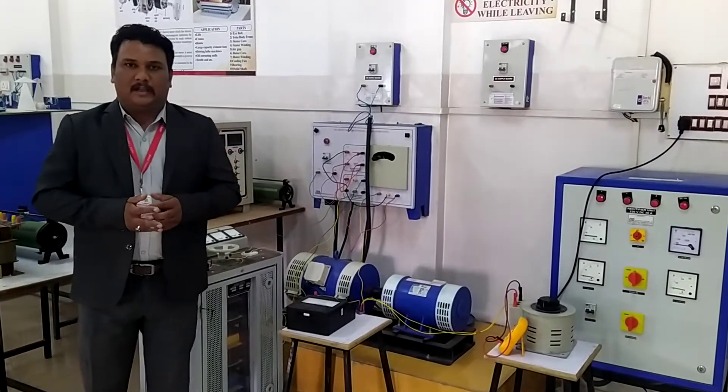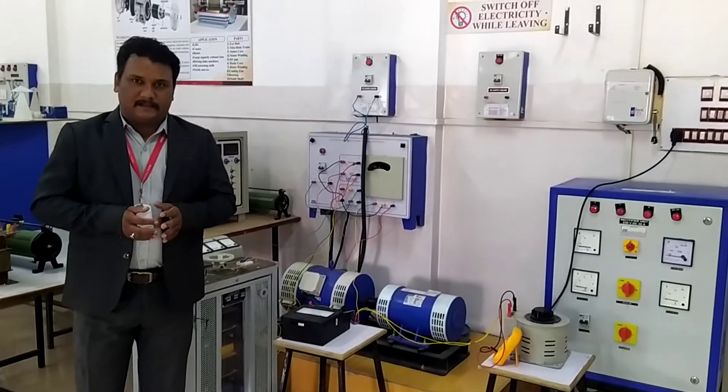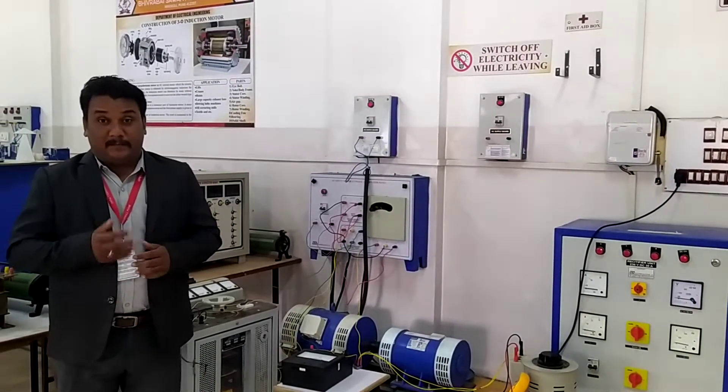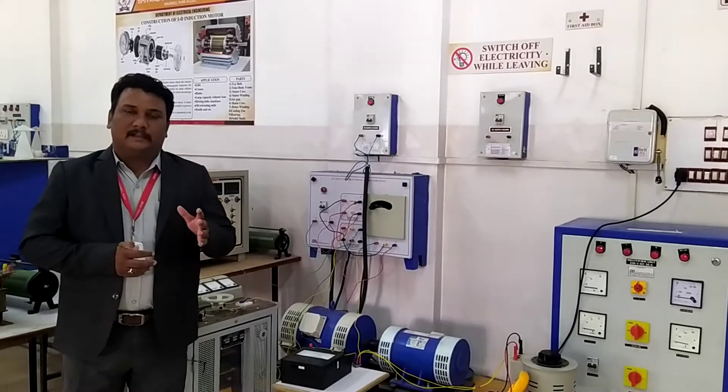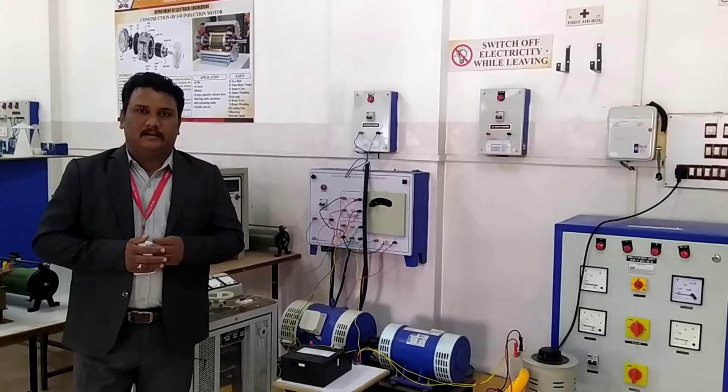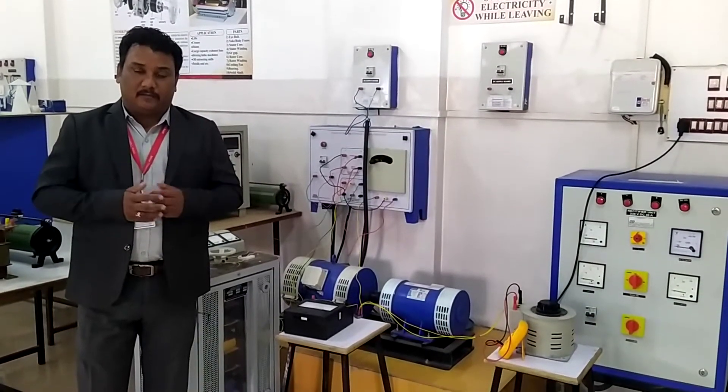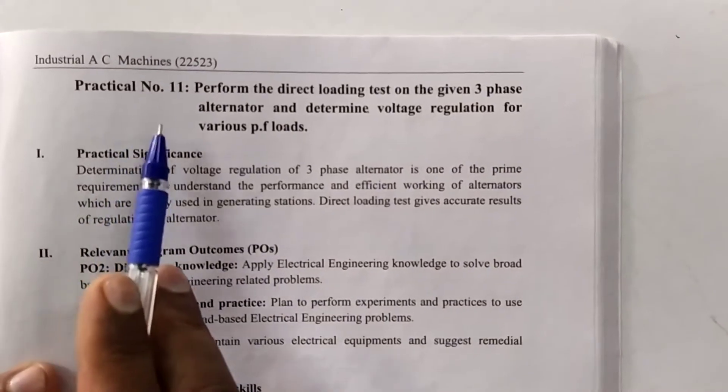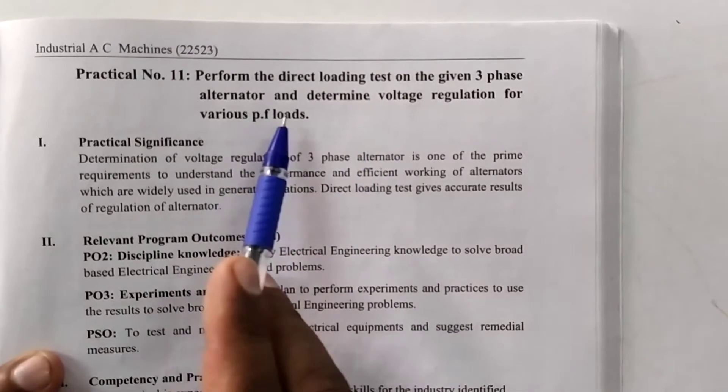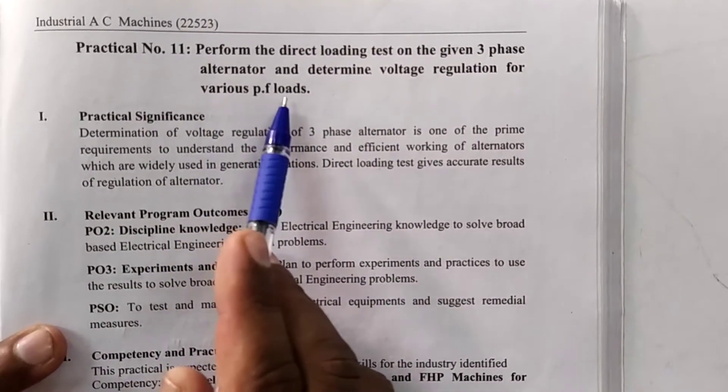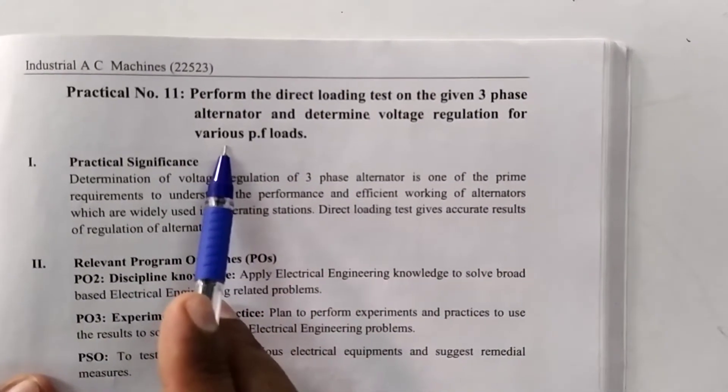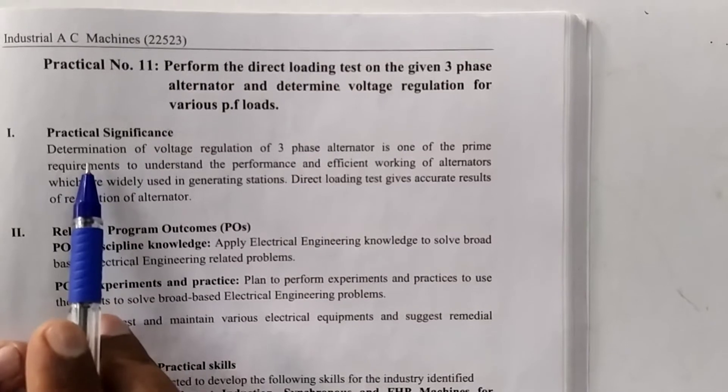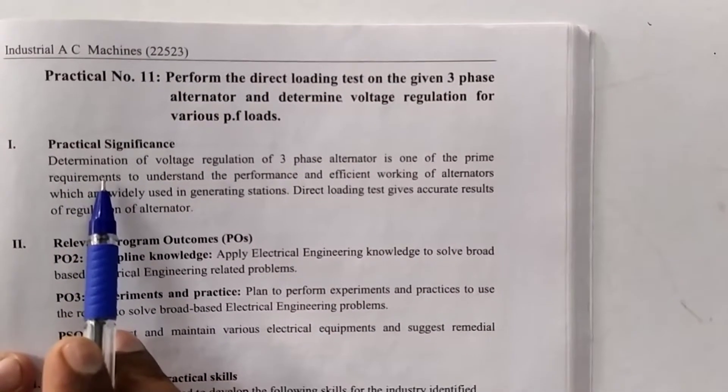Today we are going to conduct our practical in the course subject Industrial AC Machine which belongs to 3rd year diploma in electrical engineering. Our experiment number is 11 and our title is perform the direct loading test on the given alternator and determine the regulation at different power factor loads. Alternator is widely used in a generating station as in industry or as auxiliary power supply.